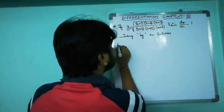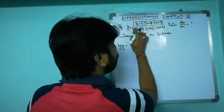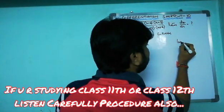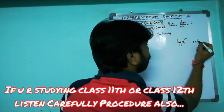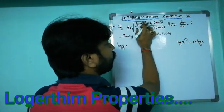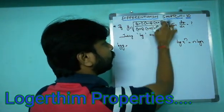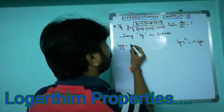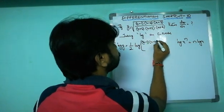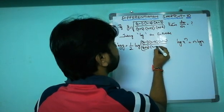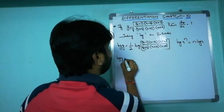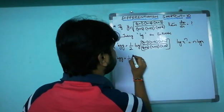Taking log on both sides: log y equals the log of the total expression raised to the power of one-half. This is of the form log(x^n) = n·log(x), so we can write: log y = (1/2) · log[(x−1)(x−2)(x+3) / (x+4)(x+5)(x+6)].